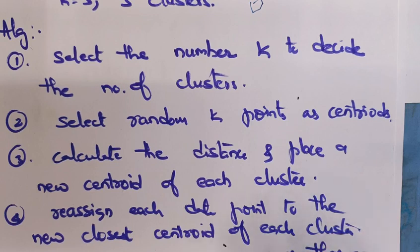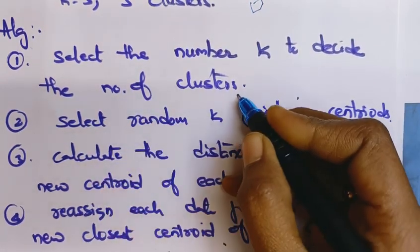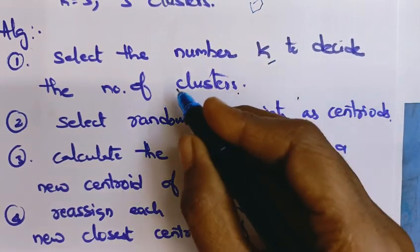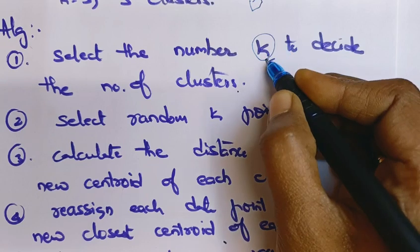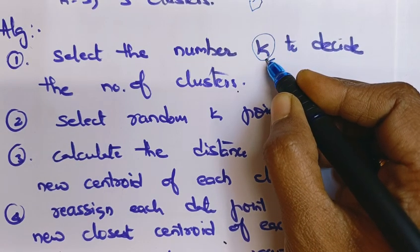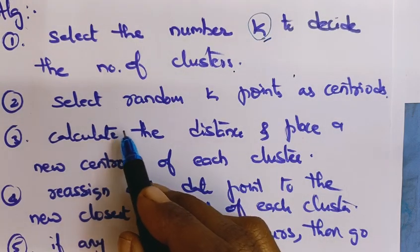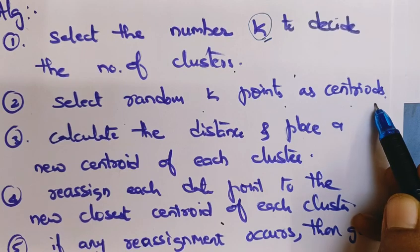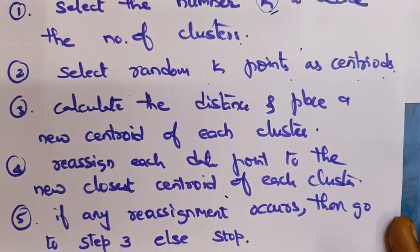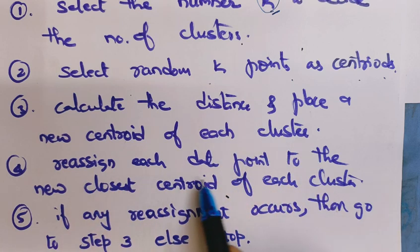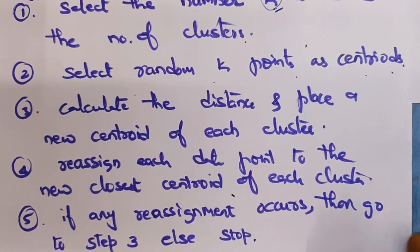The K-Means algorithm steps are: Step 1 - select the number K to decide the number of clusters. Step 2 - select random K points as centroids. Step 3 - calculate the distance and place a new centroid for each cluster. Step 4 - reassign each data point to the new closest centroid. Step 5 - if any reassignment occurs, go to step 3, else stop.